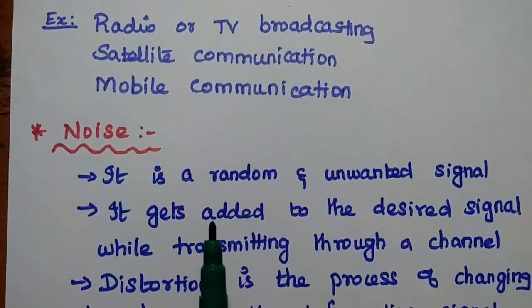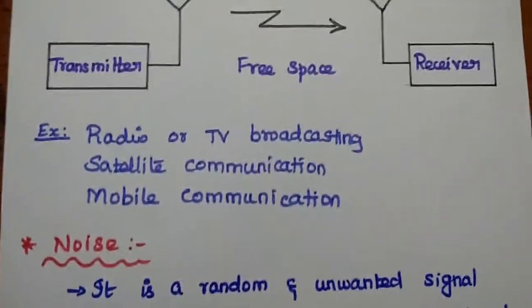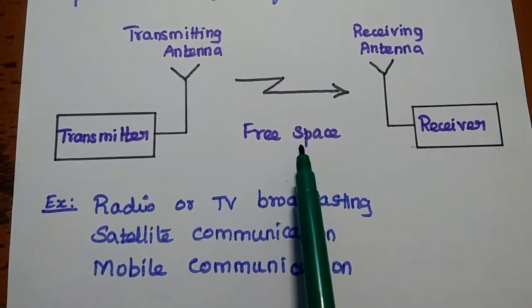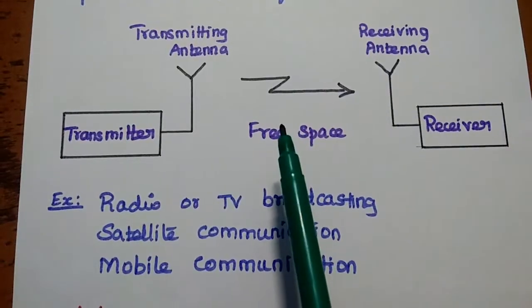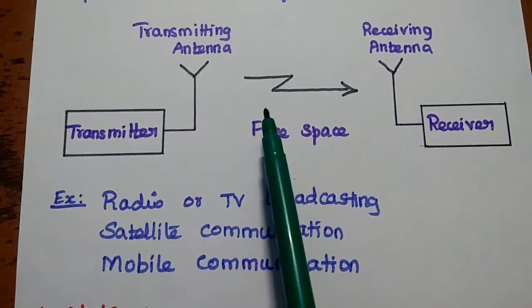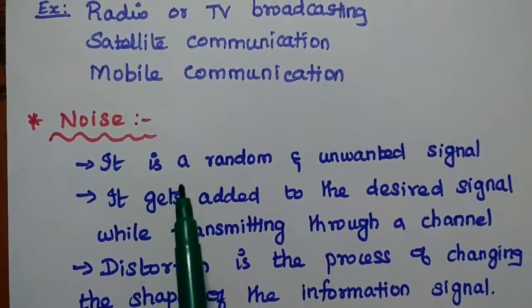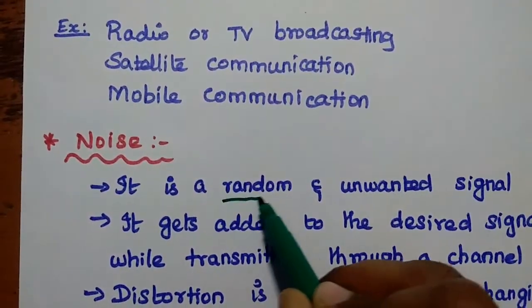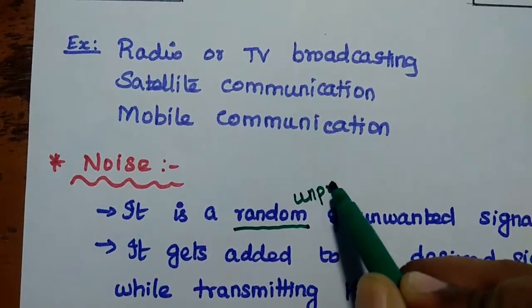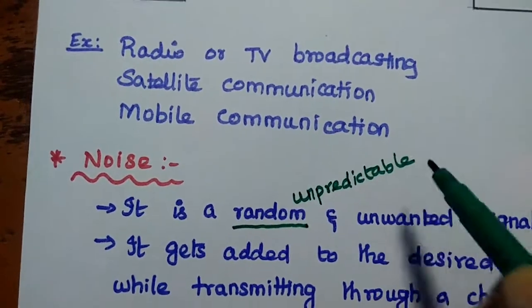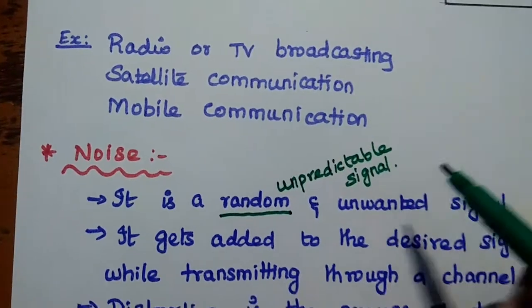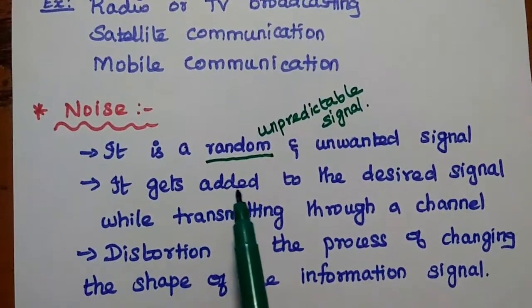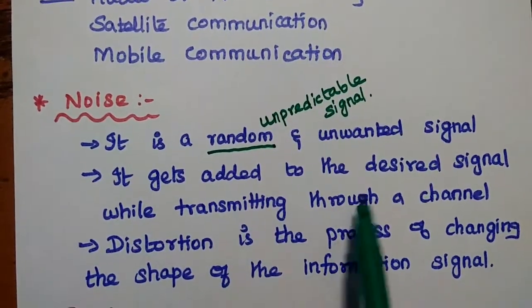Next, let's look at noise in the communication system. Whether using a wired or wireless medium, while transmitting a signal through a channel, there may be some noise. This noise signal affects our original signal. Noise is a random and unwanted signal — random meaning unpredictable. It happens on its own and gets added to the desired signal while transmitting through the channel.